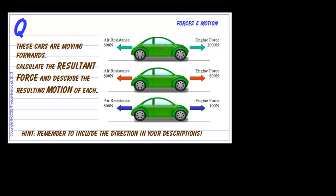So let's take the first case. We've got a forward engine force of 2000 Newtons and we've got a backwards air resistance force of 800. So what we've got to do here is we've got to add up these forces.